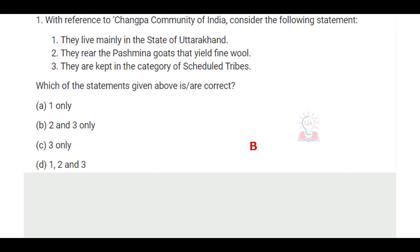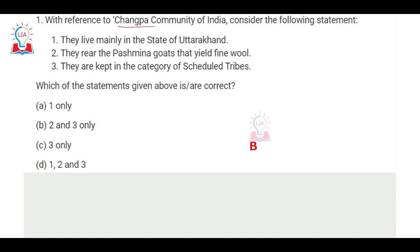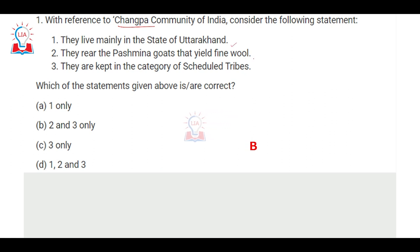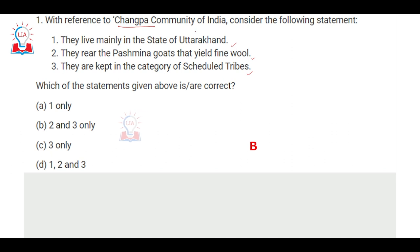The first question is related to one of the tribal communities of India, that is the Changpa community. With reference to the Changpa community of India, consider the following statements: first, they live mainly in the state of Uttarakhand; second, they rear Pashmina goats which yield fine wool; third, they are kept in the category of settled tribes. The correct answer is B.